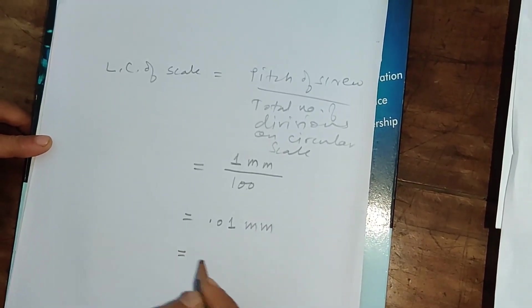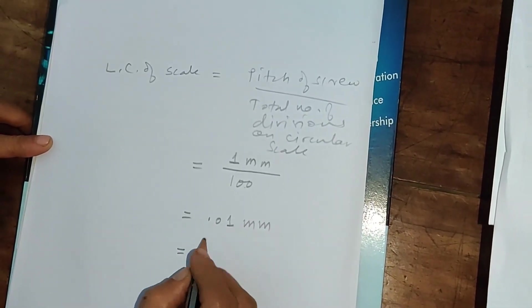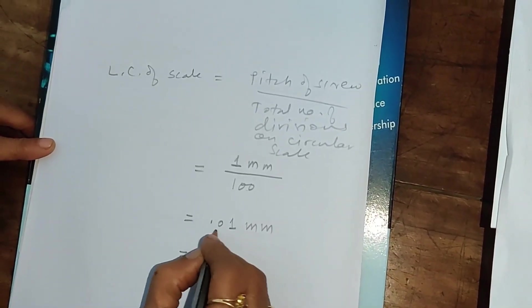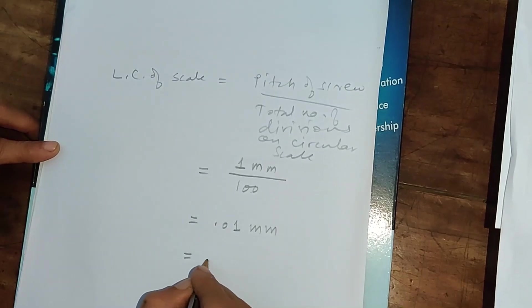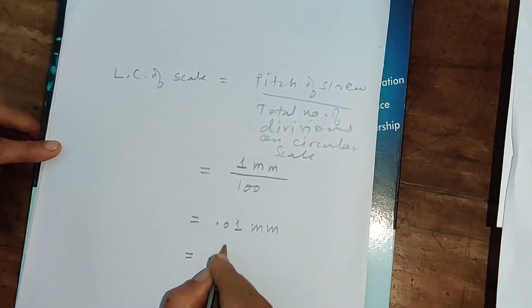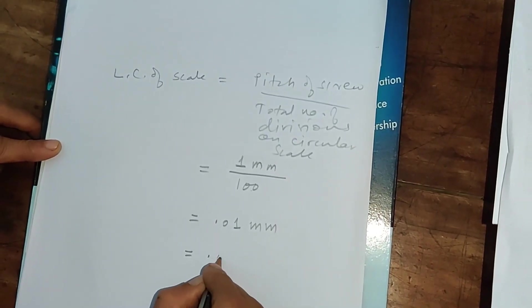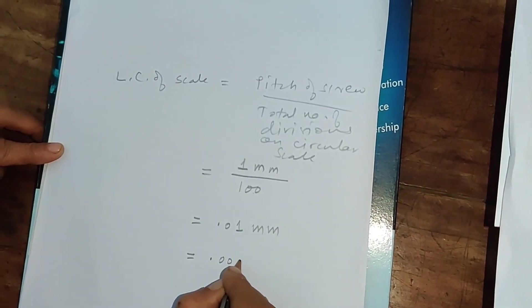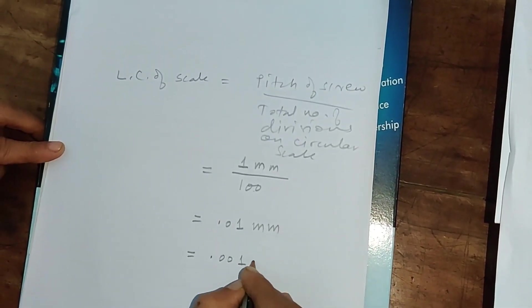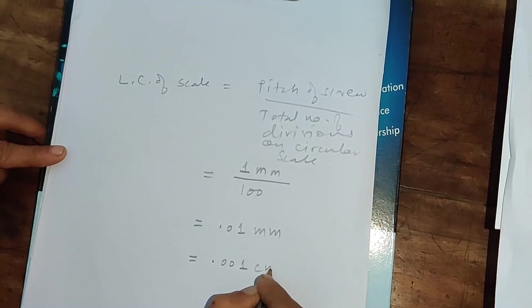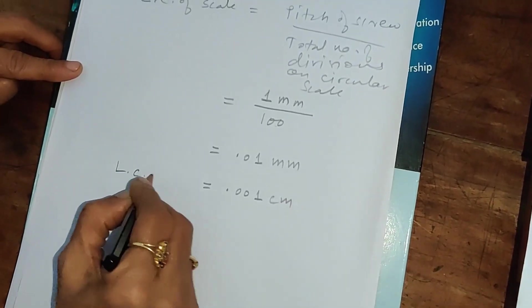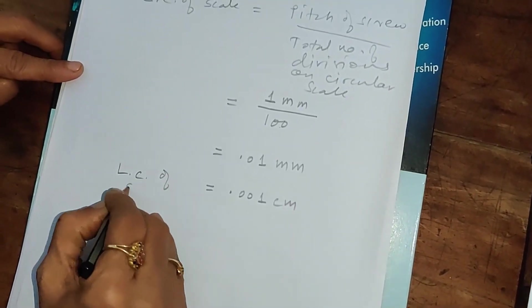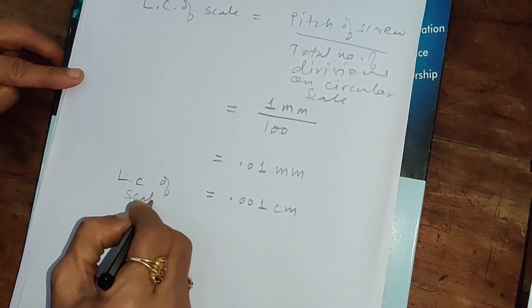If we want to convert it to centimeters, then we will have to divide it again by 10, and thereby this will be equal to 0.001 centimeter. This is the least count of the scale.